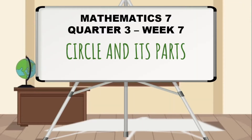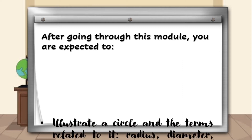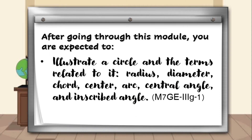For third quarter's week 7 lesson, we will talk about the circle and its parts. After going through this module, you are expected to illustrate a circle and the terms related to it, such as the radius, diameter, chord, center, arc, central angle, and inscribed angle.